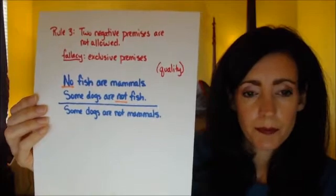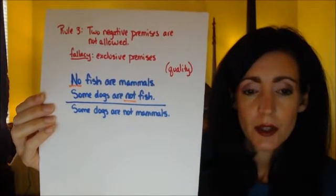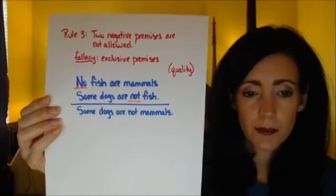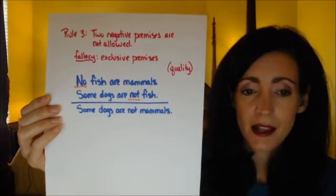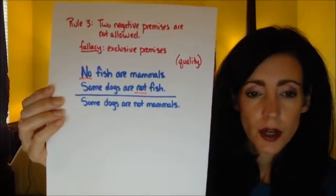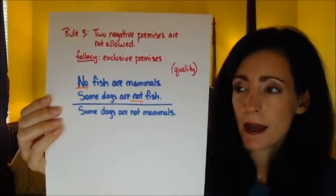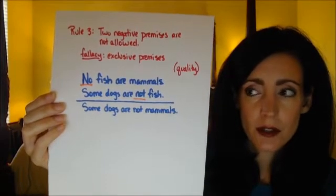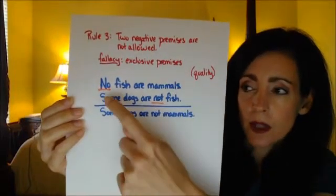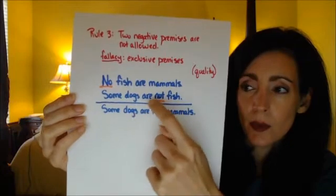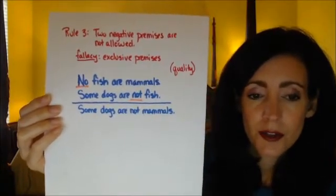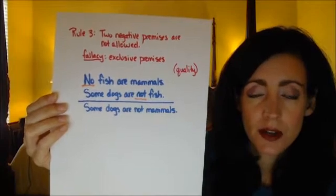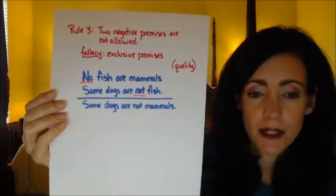Rule number three: two negative premises are not allowed. With rule three, we're focusing on quality. If two negative premises occur, the fallacy is called exclusive premises. For example: 'No fish are mammals. Some dogs are not fish.' The word 'no' makes the first premise negative, and 'are not' makes the second premise negative. You cannot have two negative premises because it will always cause the syllogism to be invalid — this commits the fallacy of exclusive premises.